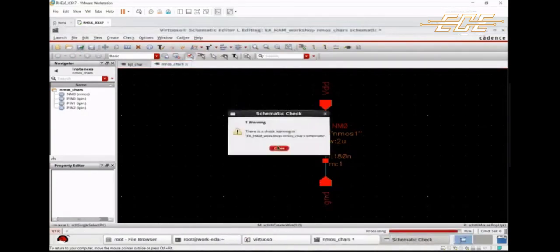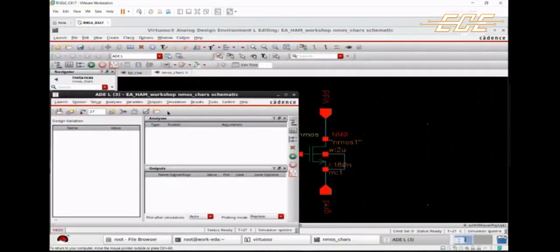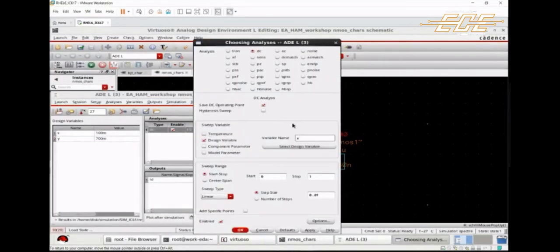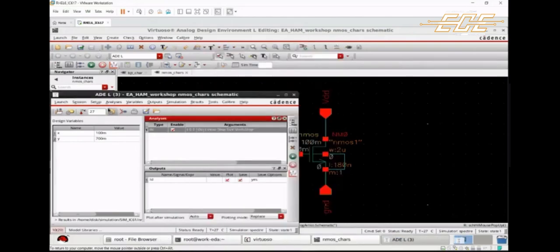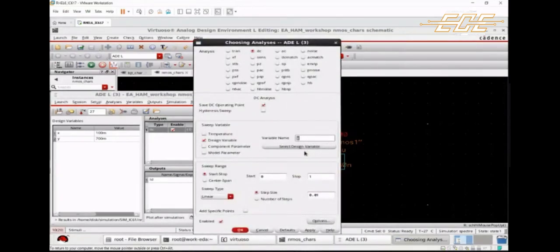Once you're done with your circuit, launch ADEL analysis window. Virtuoso allows a wide range of options like transient, DC, AC, noise, and a lot more. For instance, let us do a DC analysis.